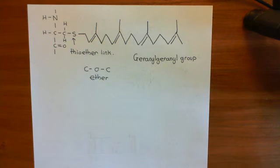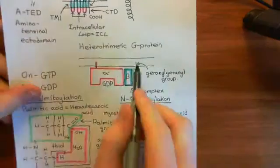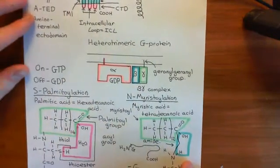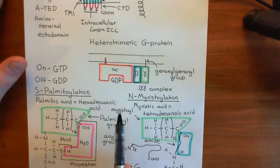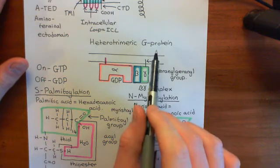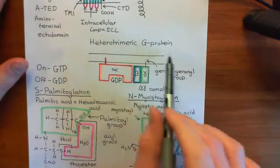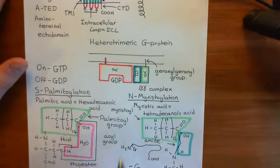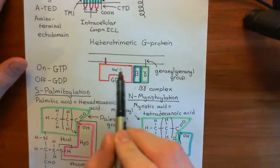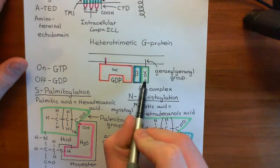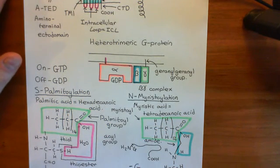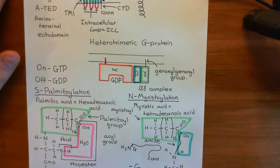When the alpha subunit is in the off state, it associates with the beta-gamma complex to form the full heterotrimeric G protein. In the next video, we're going to discuss the diversity of heterotrimeric G proteins - how many different ones there are, covering all the different alpha subunits, beta subunits, and gamma subunits. This is the heavy part, but once you've got it, you won't be confused when you encounter terms like G alpha O in a paper.